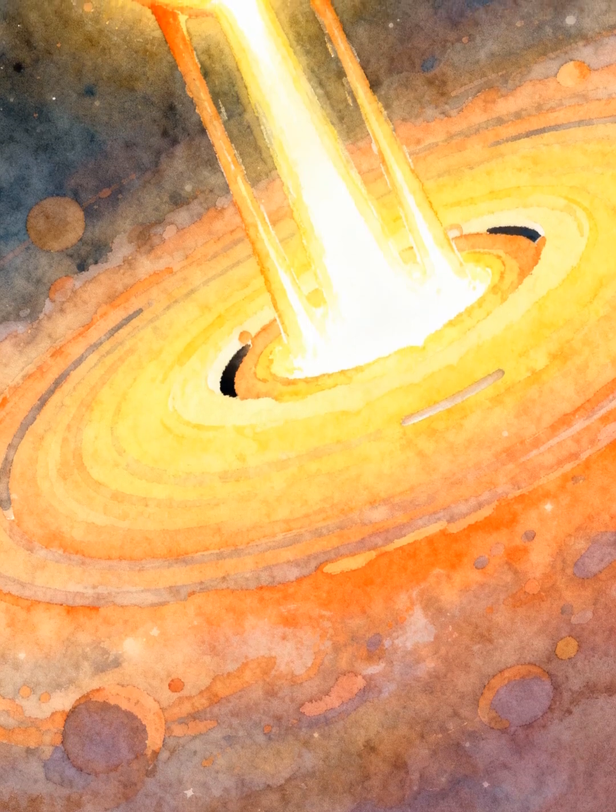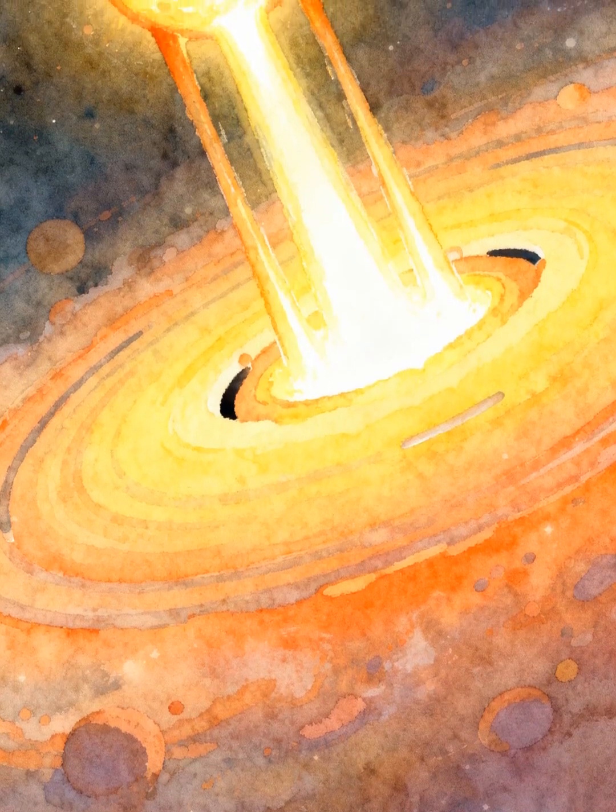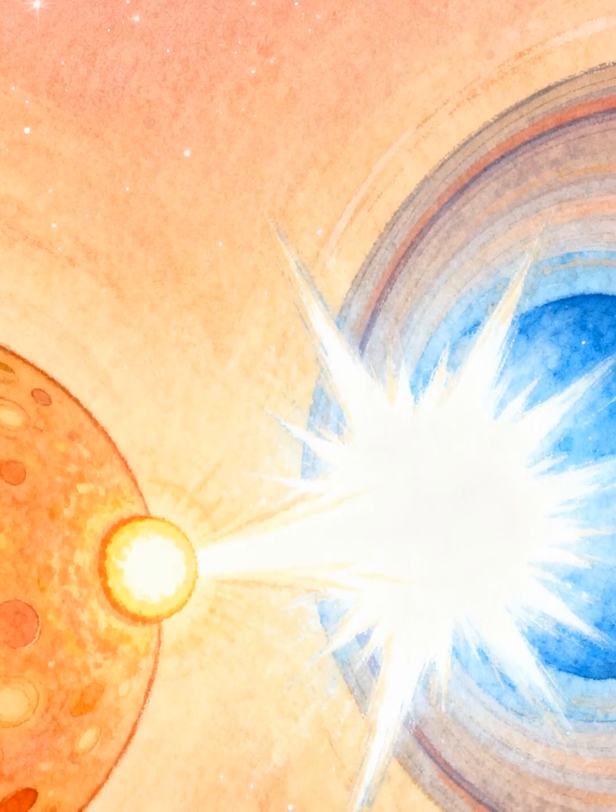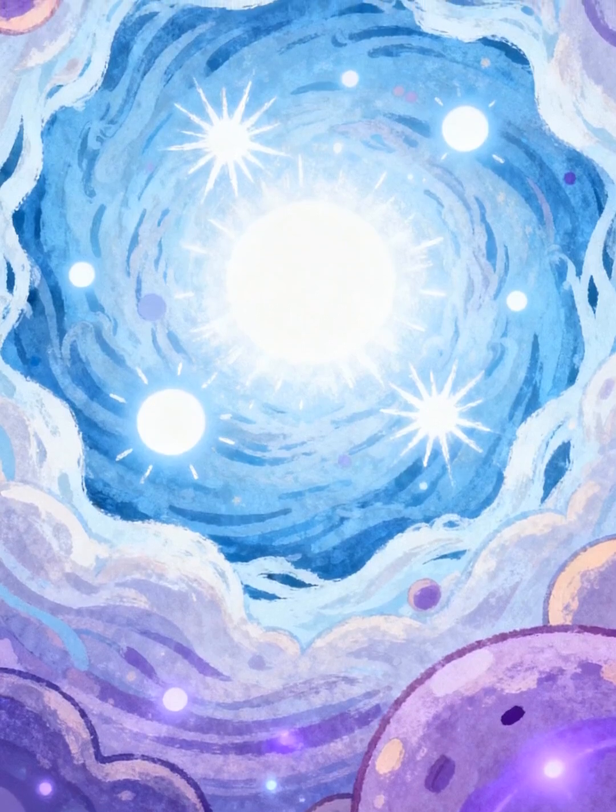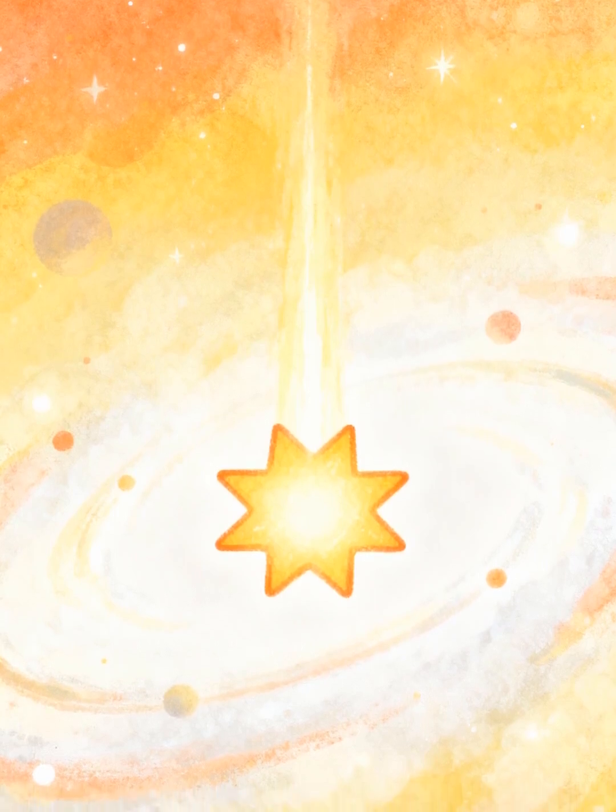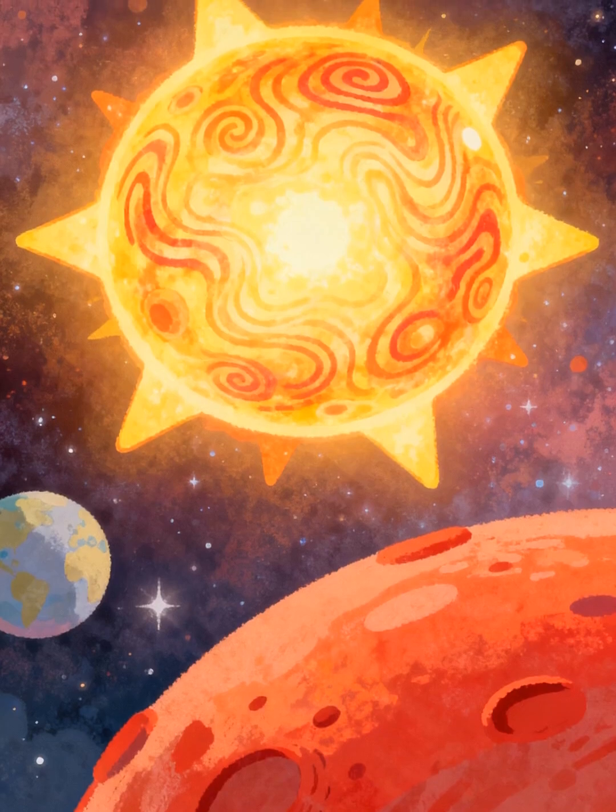The protostar continues to gather mass, becoming denser and hotter. Eventually, the core becomes hot enough for nuclear fusion to begin. Hydrogen atoms fuse to form helium, releasing tremendous energy. This energy creates outward pressure, balancing the inward pull of gravity. A star is born.